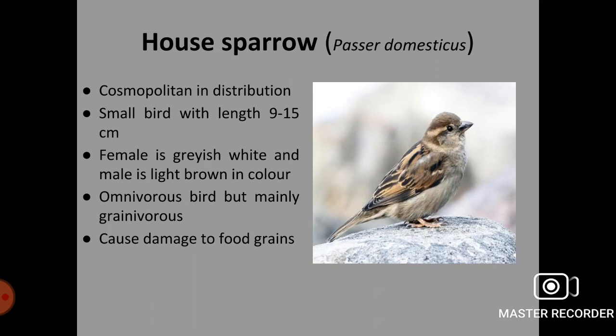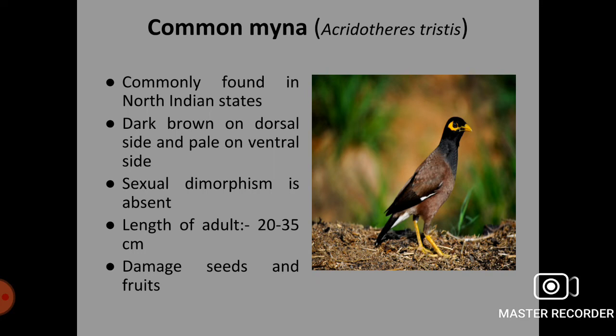Next pestiferous bird is the common myna, scientific name Acridotheres tristis. It is commonly found in North Indian states. Colour is dark brown on the dorsal side and pale on the ventral side. Sexual dimorphism is absent, meaning males and females cannot be distinguished. Length of the adult bird is 20 to 35 cm. Common myna causes main damage to seeds and fruits.